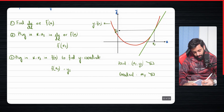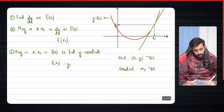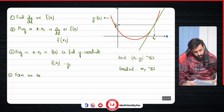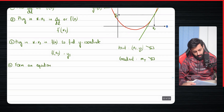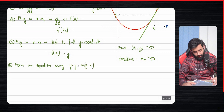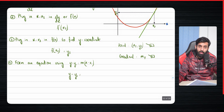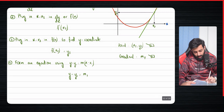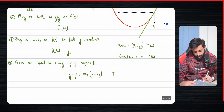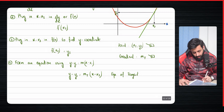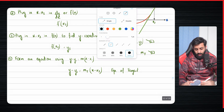Then comes the final step: form the equation. You use y − y1 = m(x − x1), where y1 is the y-coordinate, m is the gradient of the tangent from step two, and x1 is the x-coordinate. This gives you the equation of the tangent.